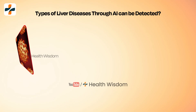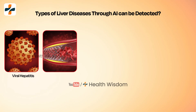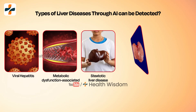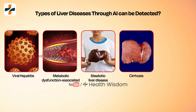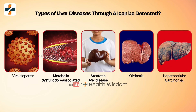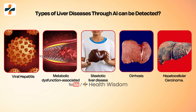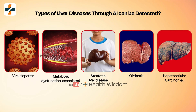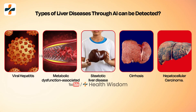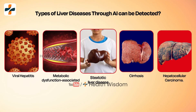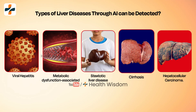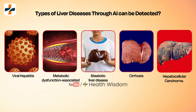Types of liver diseases that AI can detect: liver diseases are characterized by complexity and diversity, encompassing a wide range of conditions like viral hepatitis, metabolic dysfunction-associated steatotic liver disease, cirrhosis, and hepatocellular carcinoma.